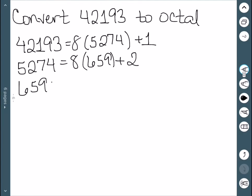We now do 659 divided by 8. This gives us a quotient of 82 with a remainder of 3. Keep going. 82 divided by 8 is 10 with a remainder of 2.